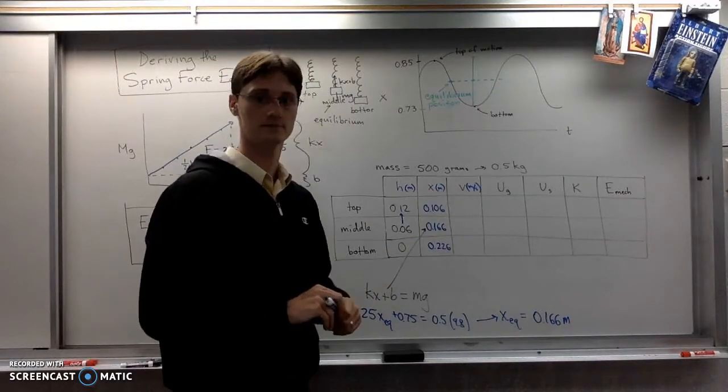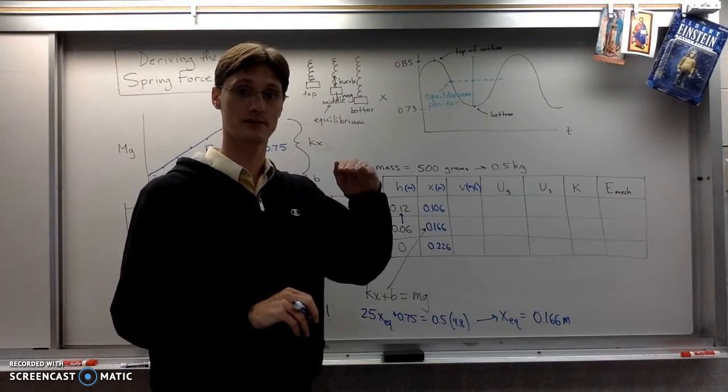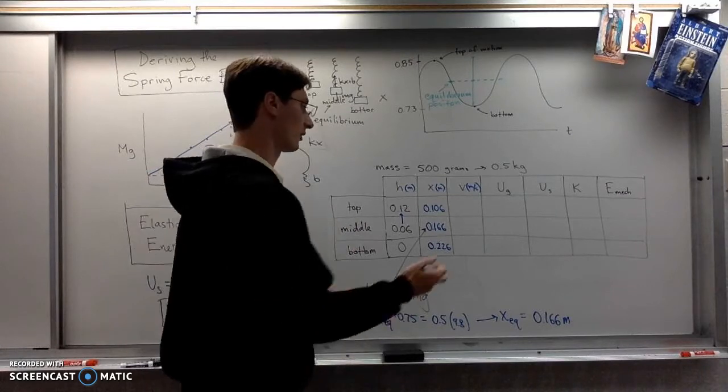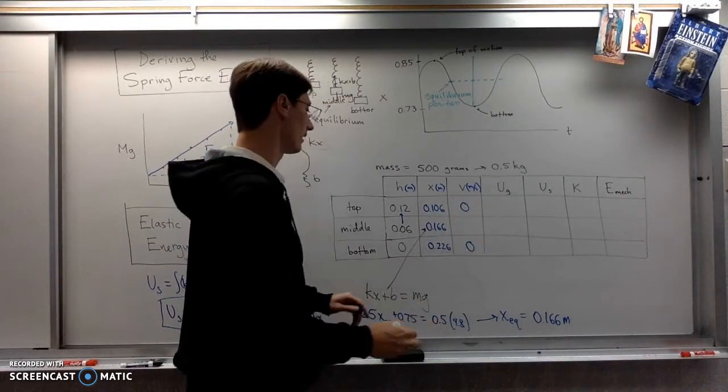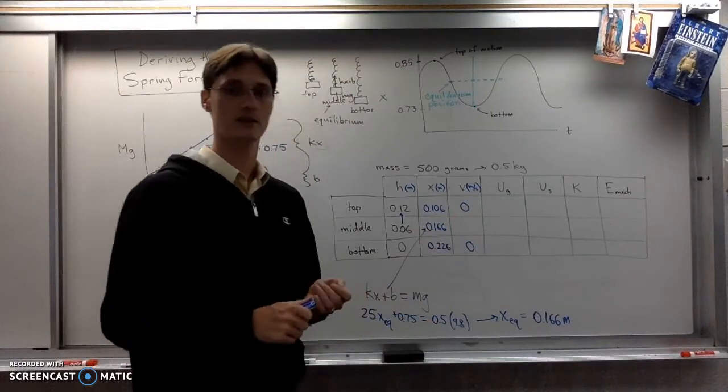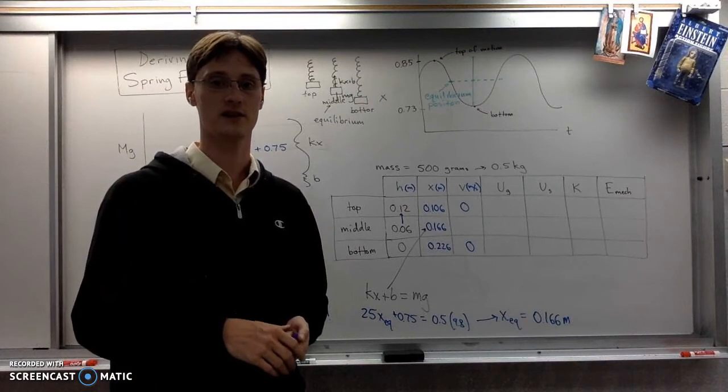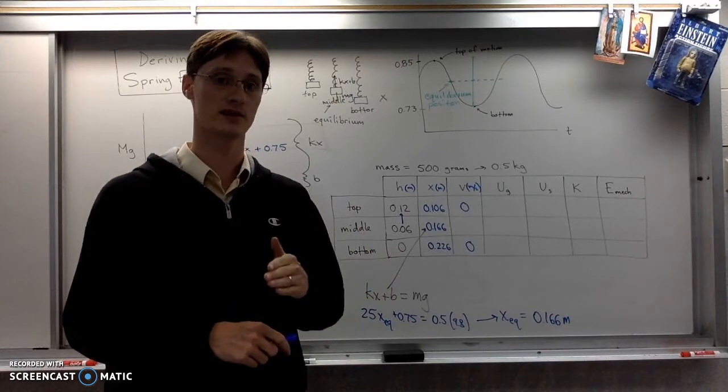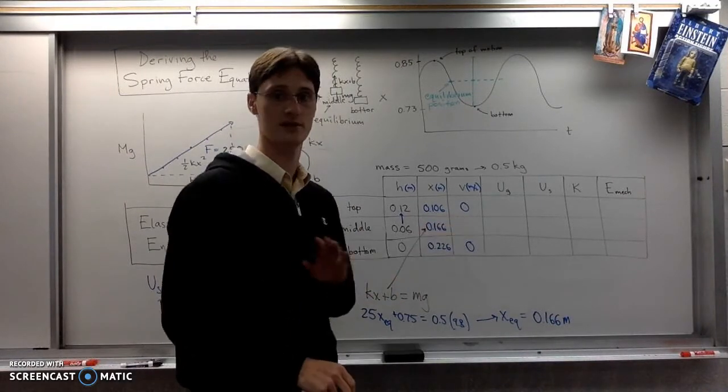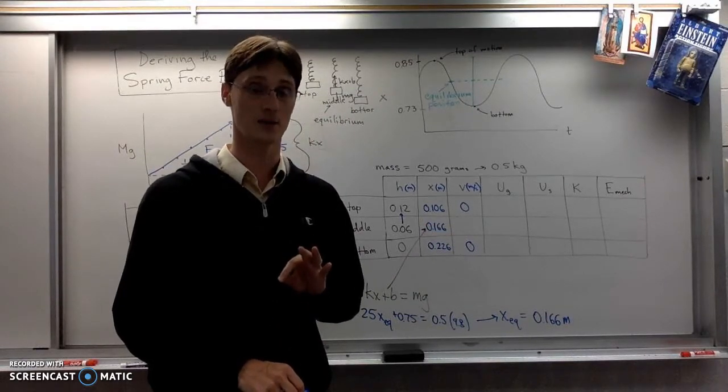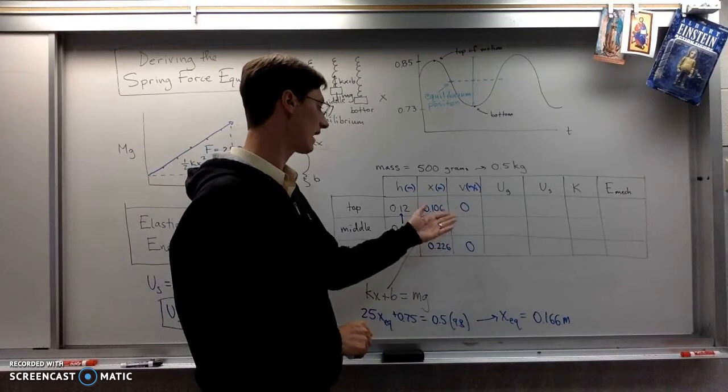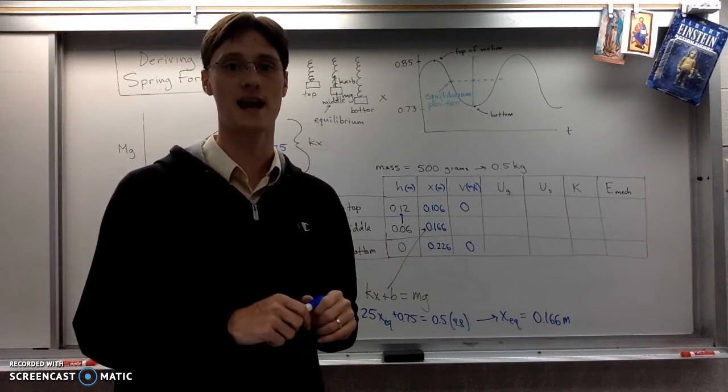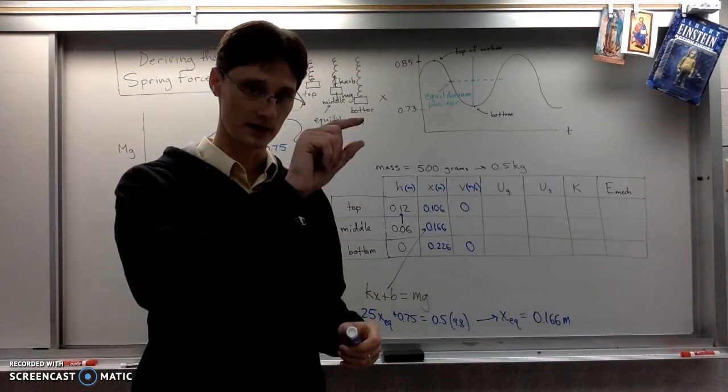All right, for the speed, at the top it stops because that's why it's the top. At the bottom it stops for the same reason. It wouldn't be top or bottom if it was still moving. For the middle, if you're tempted to like calculate that or something using conservation of energy, that's not the right idea. The point of the lab is to show conservation of energy. So instead what you do is you look up the speed in the data table that you got. So the speed at the middle, at equilibrium, you should remember is the largest. The largest speed happens at equilibrium.